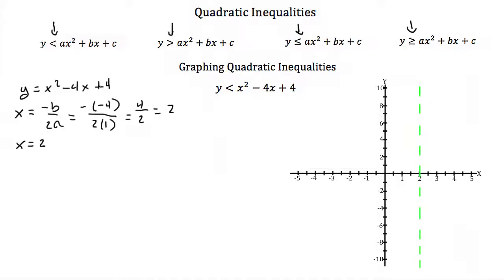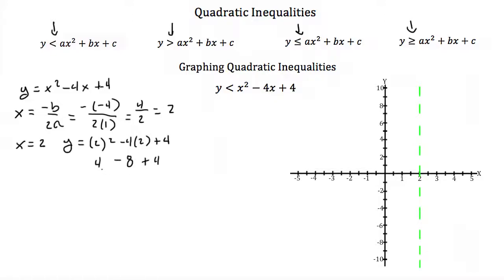I can draw that. Now to find my vertex, I just plug in x equals 2 to find the y coordinate, because the vertex lies on this axis. So our vertex has an x coordinate of 2. If we plug that in, we get y equals 2 squared minus 4 times 2 plus 4. 2 squared is 4, minus 4 times 2 is negative 8, plus 4. 4 minus 8 is negative 4, plus 4 is 0. So our vertex is the point (2, 0).